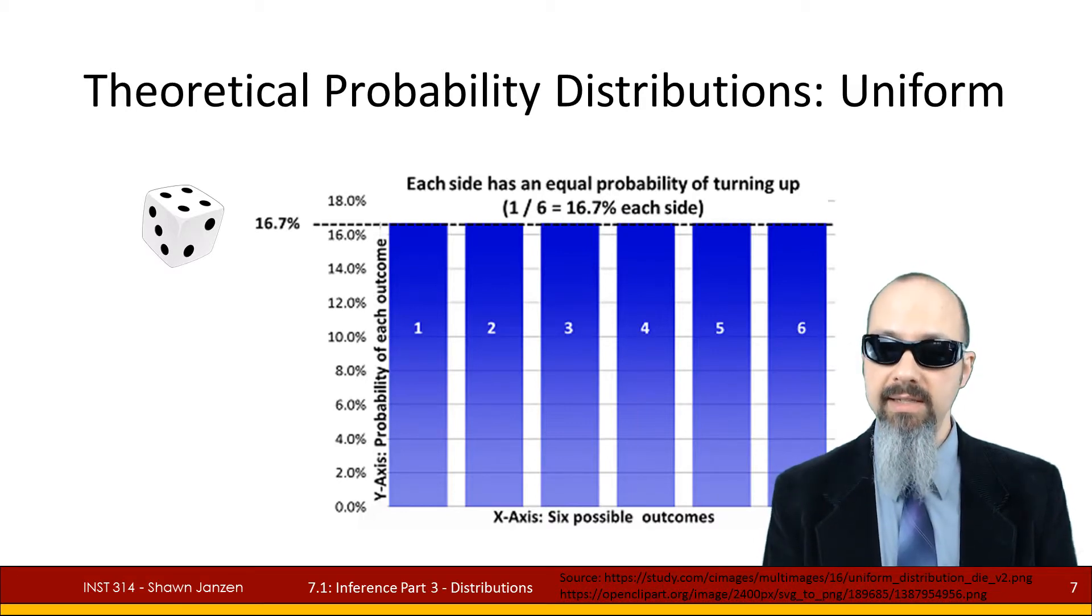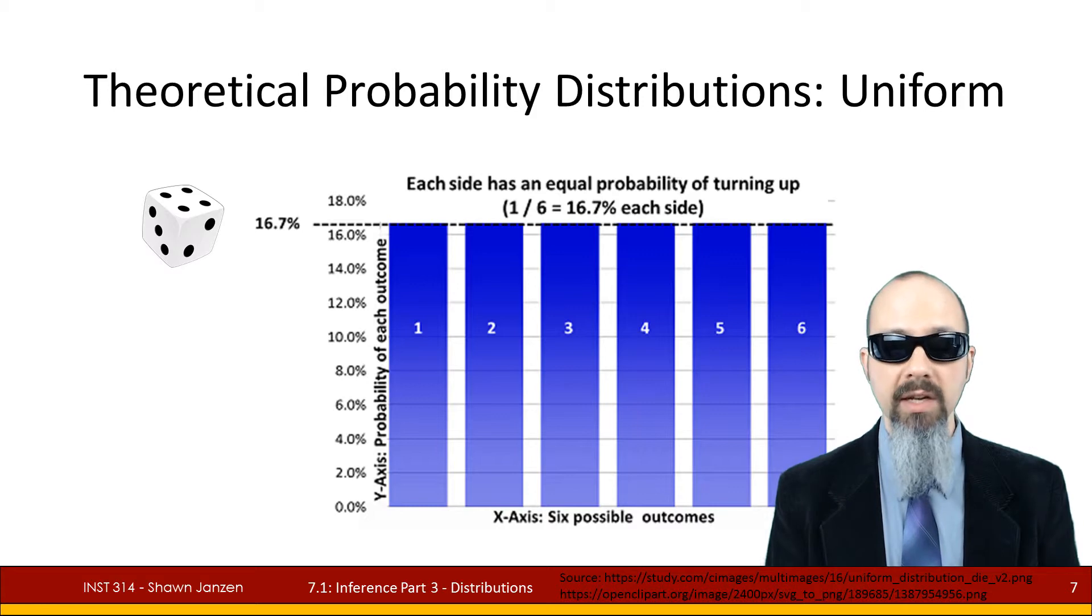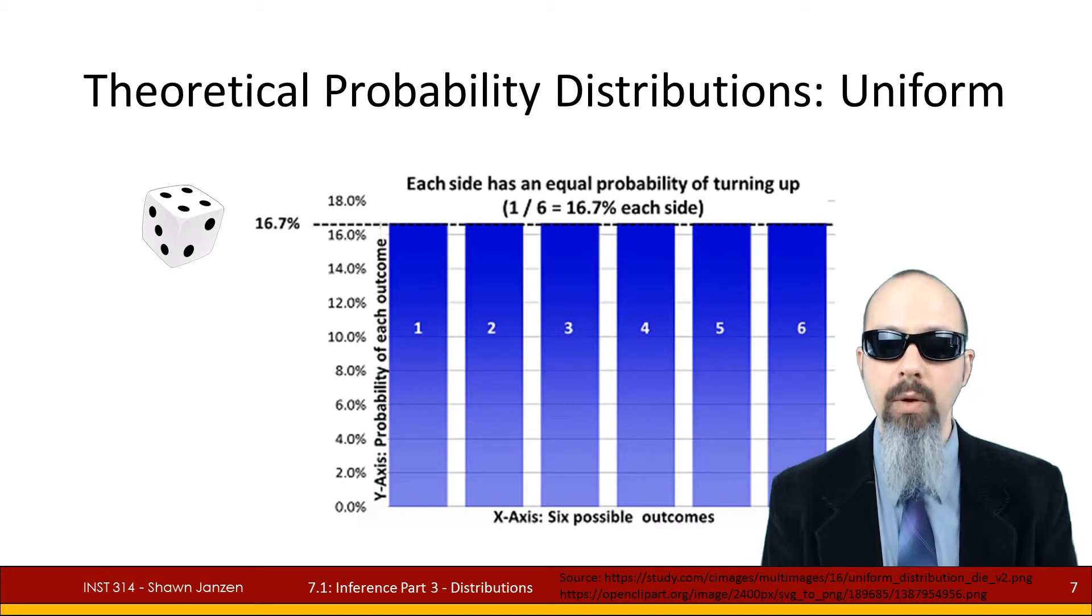Take in point the case of a die. A die has six sides and a fair die meaning if we roll it we'll have an equal chance of getting any one of the six sides. We have about a one in six chance or 16.7 percent chance of getting any one particular side of the die up when we roll it.